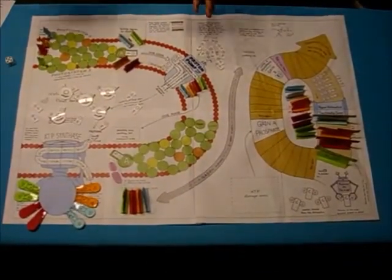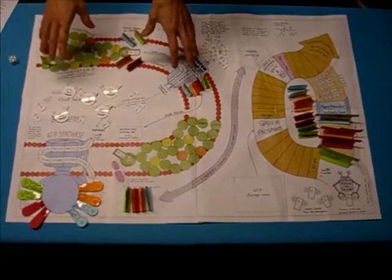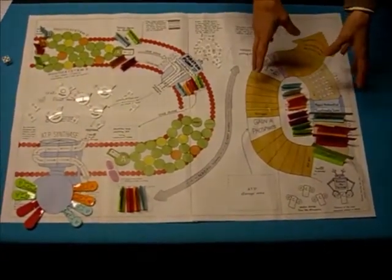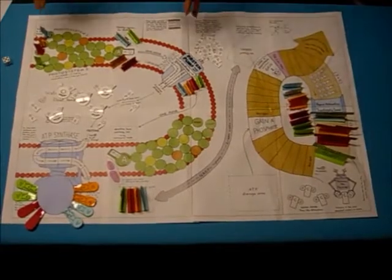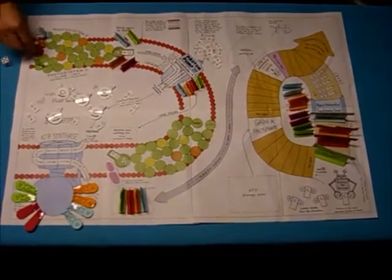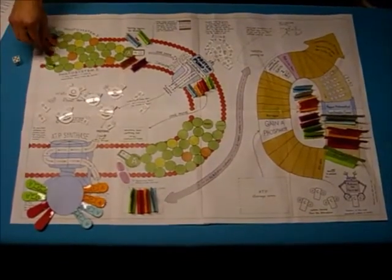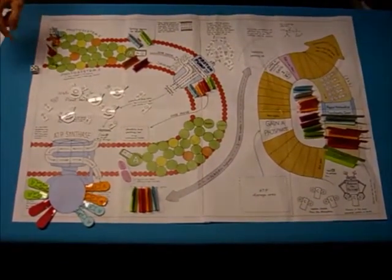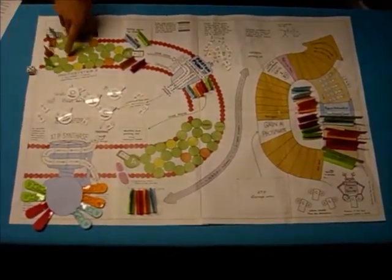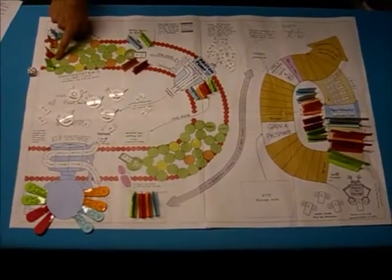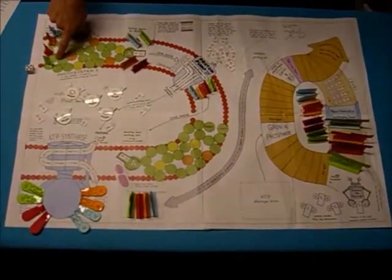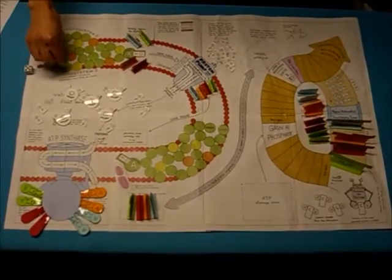This game has two parts. The light-dependent phase and the light-independent phase, or the Calvin cycle. In the light-independent phase, you start here at Photosystem II. And I'm going to show you how you roll the dice. I'm going to move some of these guys through here. You can only go from circle to circle if they're touching. So one, two, three, four, five.